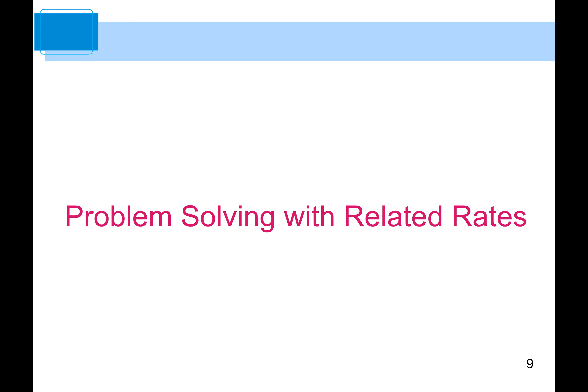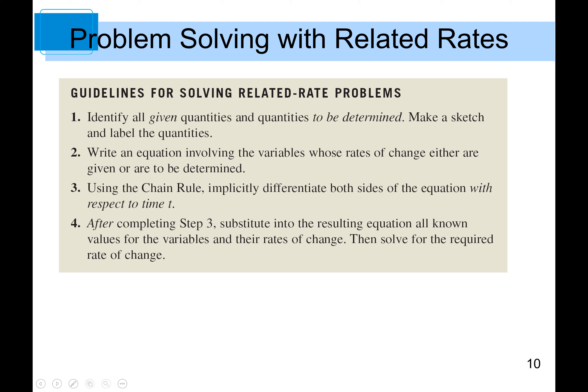Now let's look at problem-solving with related rates. Step 1: Identify all given quantities and quantities to be determined — make a sketch and label them. Step 2: Write the equation involving the variables whose rates of change are given or to be determined. Step 3: Use the chain rule to implicitly differentiate both sides with respect to time t. Step 4: Substitute known values for variables and rates, then solve for the required rate of change.